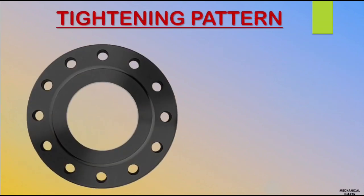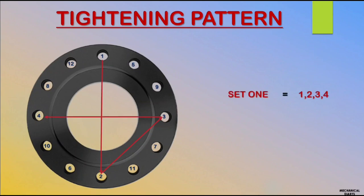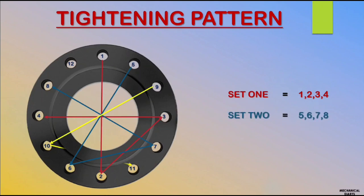For a 12-bolt flange example: mark number 1 on the top of the flange, number 2 directly opposite to number 1, number 3 on the right side, and number 4 straight opposite to number 3. Then divide the 12 bolts into 3 sets: first set is 1, 2, 3, 4; second set is 5, 6, 7, 8; third set is 9, 10, 11, 12. If you tighten the bolts in this pattern you can avoid leaks 100%.